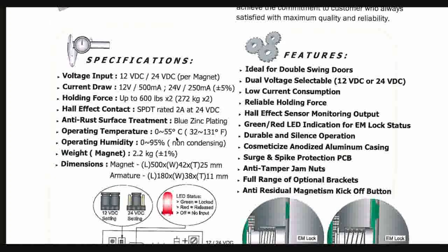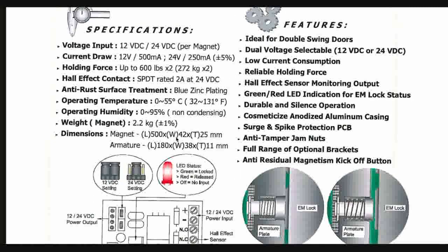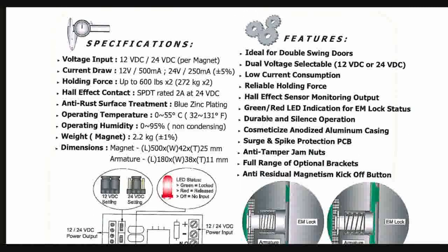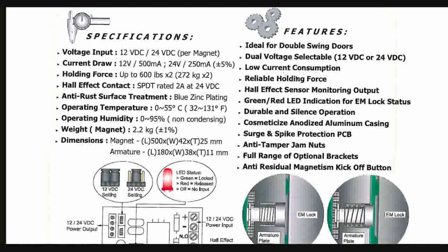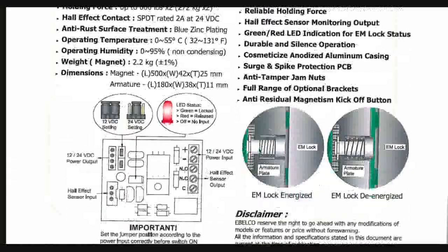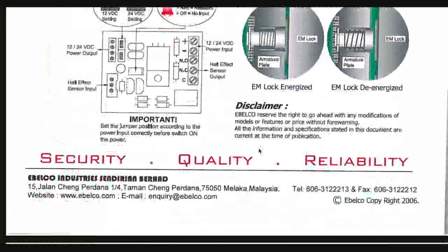The magnetic lock specifications also include operating voltage, operating humidity, and a weight of 2.2 kilograms, along with its dimensions. It is ideal for double swing doors with low current consumption and reliable holding, and offers the advantage of this type of contact.